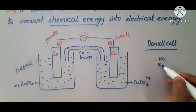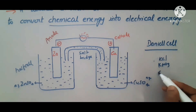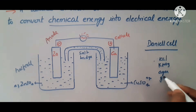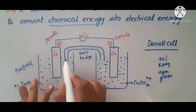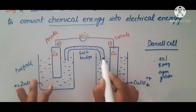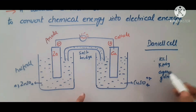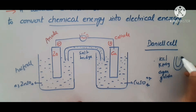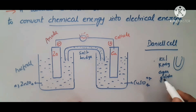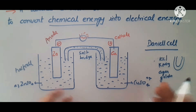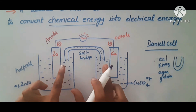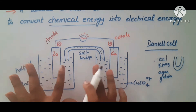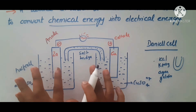The salt bridge is made of a gel-type material filled inside a glass tube in a U-shape, sometimes with porous cotton. This material balances the concentration between the two beakers. The inert material in the salt bridge spreads ions to maintain electrical neutrality.